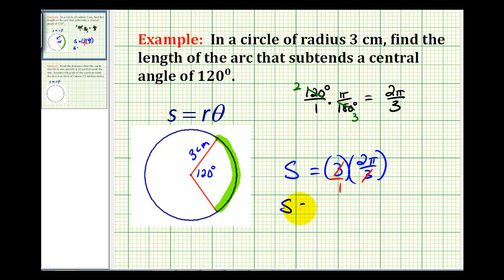So our arc length is equal to two pi, and it would be centimeters, which would be approximately 6.28 centimeters.